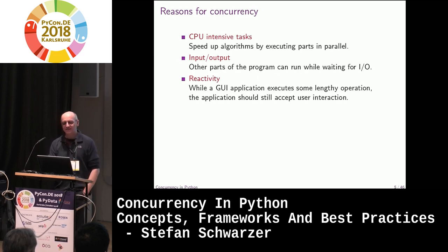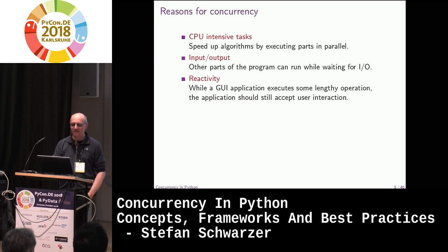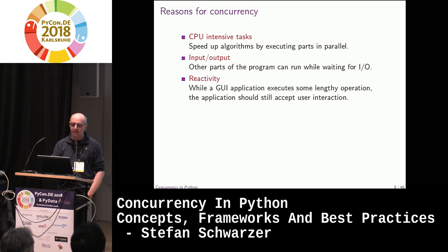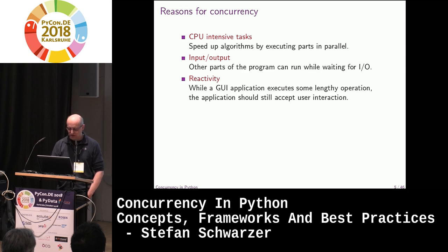Reasons for concurrency include speeding up CPU-intensive tasks, either by running the same calculations on different cores in parallel, or executing a single algorithm on multiple cores — which requires that the algorithm can be parallelized.